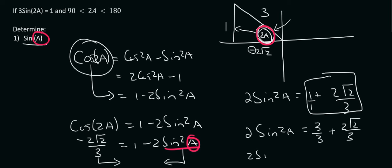So that means that 2 sin squared A is going to be equal to, now that your denominators are the same, you can just put it over 3 and you can just say 3 plus 2 square root 2. And we can't do anything further with that.